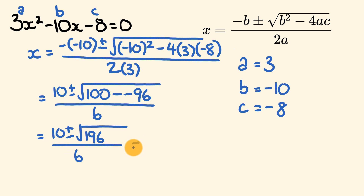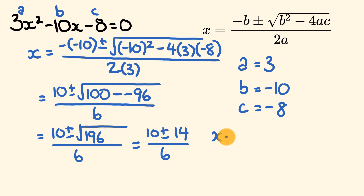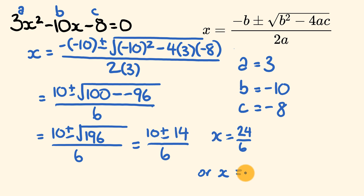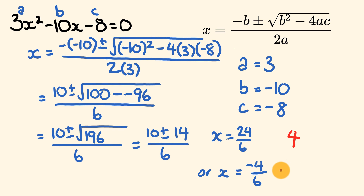So what we have is: 10 plus or minus the square root of 196. The square root of 196 is 14, and this goes over 6. x is going to equal either 10 plus 14 — that's 24 over 6 — or x equals 10 minus 14, which is negative 4 over 6. So 24 divided by 6 is equal to 4. Or negative 4 over 6 simplifies down to negative 2 over 3. And there we have two answers for our equation.